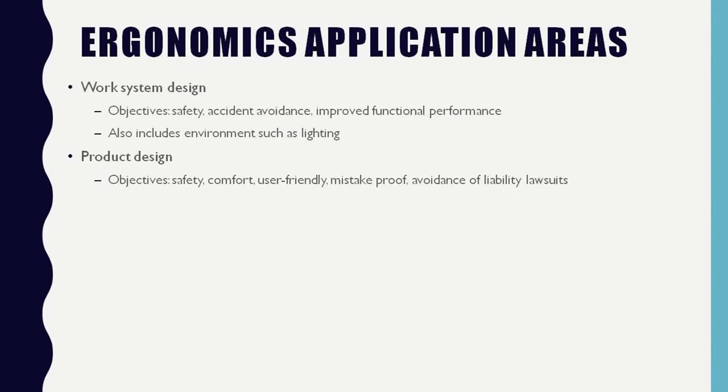Now, coming back to the various aspects of ergonomics and possible application areas. There are basically two areas where ergonomic research is focused: work system design and product design. In work system design, the objective is to take care of safety, avoid accidents, enhance functional performance, and include environmental factors such as lighting.